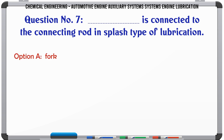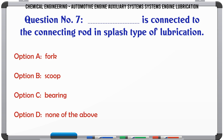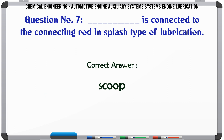What is connected to the connecting rod in splash type of lubrication? a) fork, b) scoop, c) bearing, d) none of the above. The correct answer is scoop.